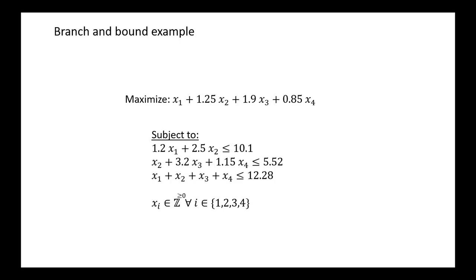The example that I came up with was a four-variable problem where we're trying to maximize an objective. That objective has the cost function shown here: x₁ plus 1.25x₂ plus 1.9x₃ plus 0.85x₄, and it's subject to three constraints. Those constraints involve subsets of the variables in each case.